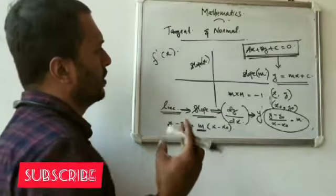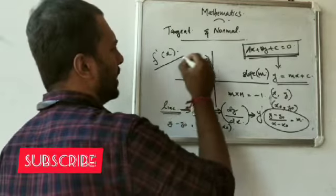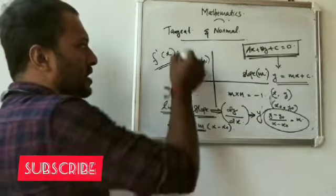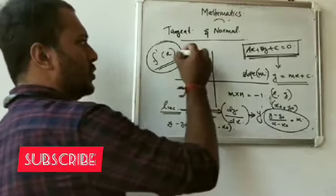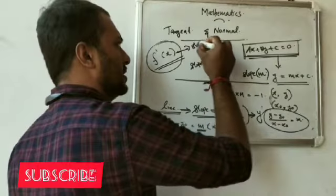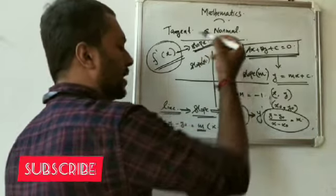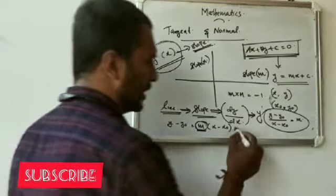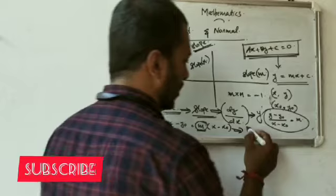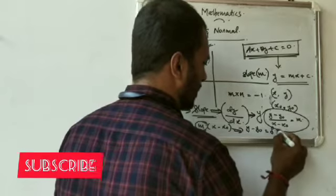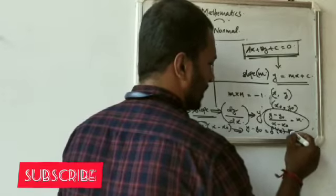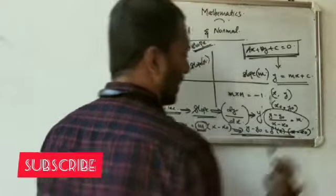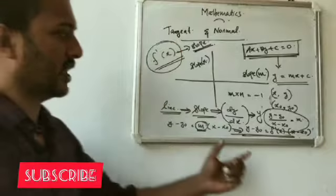F dash of x — the first derivative is the slope. That is how to substitute: y minus y0 is equal to f dash of x into x minus x0. This is the tangent equation.